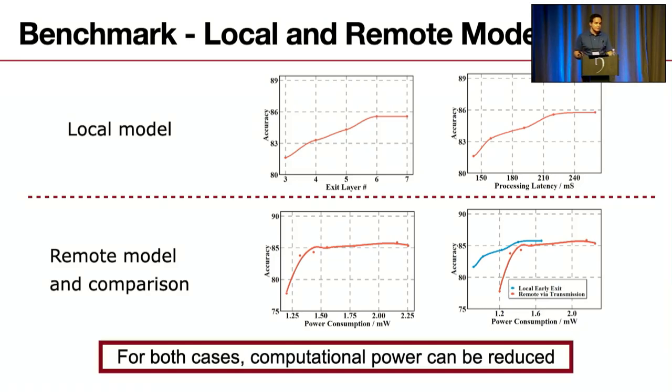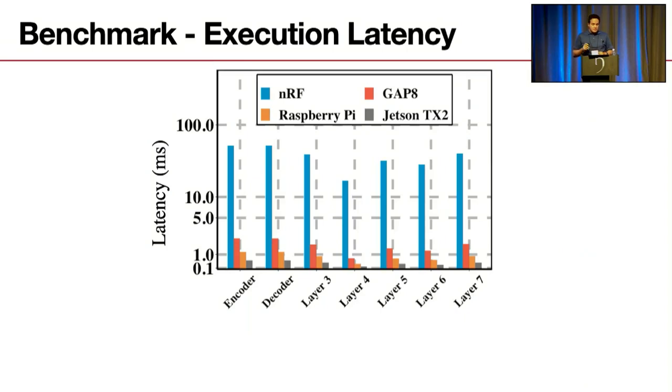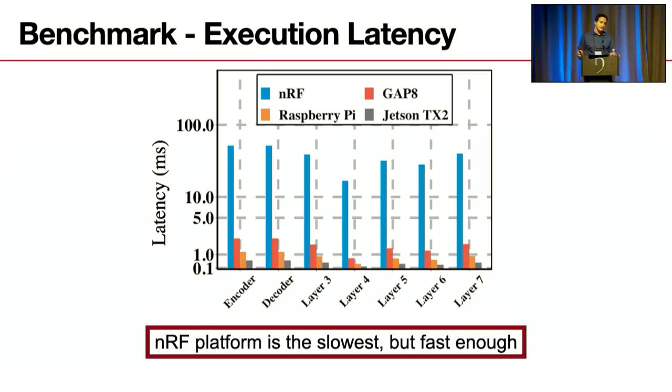The thing that's really important to note when designing such a platform is the execution latency, which means whether or not we're able to actually execute in real time. For us, execution happens every one second for a window of three seconds, so our execution latency across the pipeline should be less than one second, which is in case of NRF, which is the slowest of these competitive, but it's still fast enough and can do the job in 250 milliseconds.